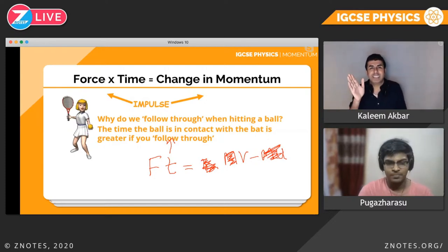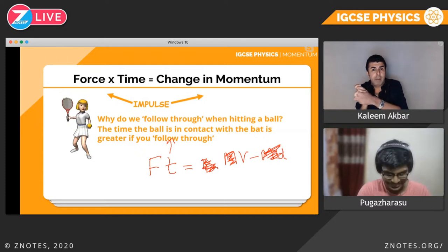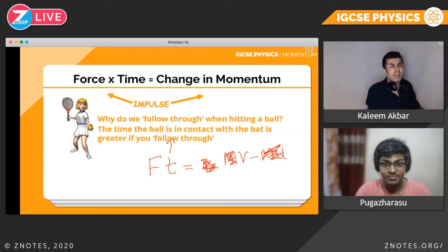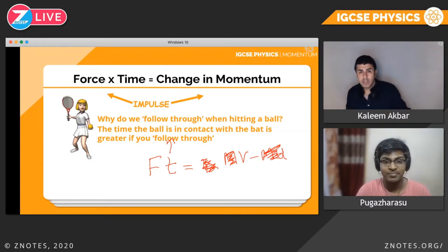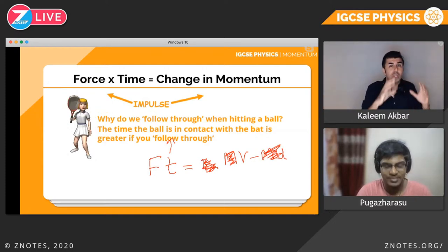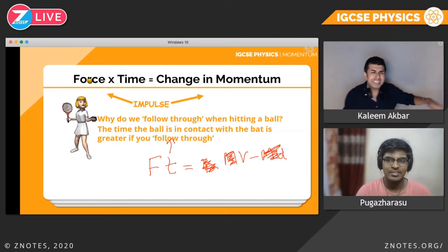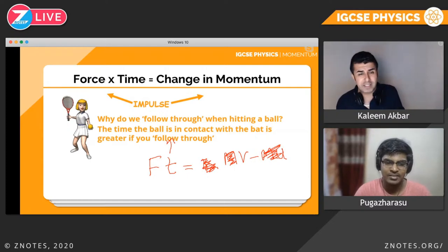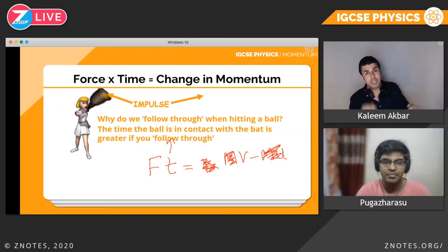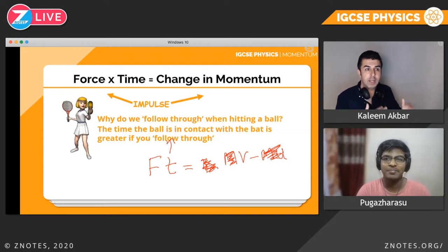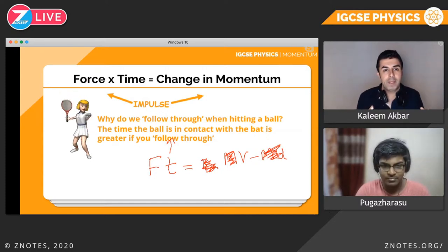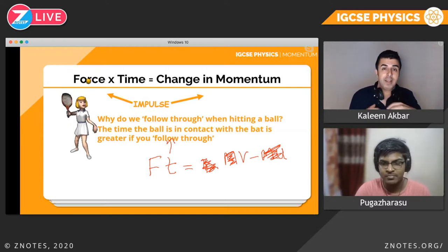Nobody ever hits a cricket ball and just taps and stops — if you watch in slow motion, they go right through it. Watch tennis players at Wimbledon — their racket goes right through. Watch a football player kick a ball — their leg is still following through long after. All they know is follow through makes the ball move faster. Watch Bruce Lee or any martial artist — they don't aim at your face, they're trying to punch the back of your head. Why? To be in contact longer. I hope you understand the concept of time here.